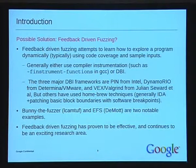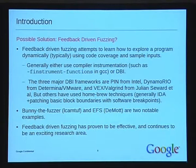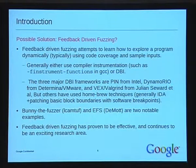Some notable examples of feedback-driven fuzzing: Bunny the Fuzzer by lcamtuf used finstrument-functions from GCC and EFS — an evolutionary fuzzing system — and used basic hill climbing and feedback to try to improve fuzz coverage. This has proven to be pretty effective and it's really exciting to be able to design this into a fuzzer.